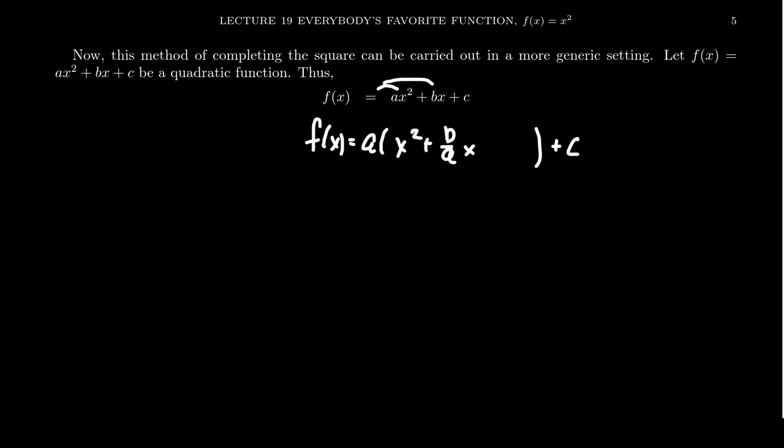Factoring a away from ax² just gives you x². Factoring away a from bx, in that situation, just leaves b/a. I don't know if that simplifies or not, but you get that fraction. Looking at this number right here, this b/a, we need to take half of that. Half of b/a gives you b/(2a). We're going to square that, which gives us b²/(4a²).